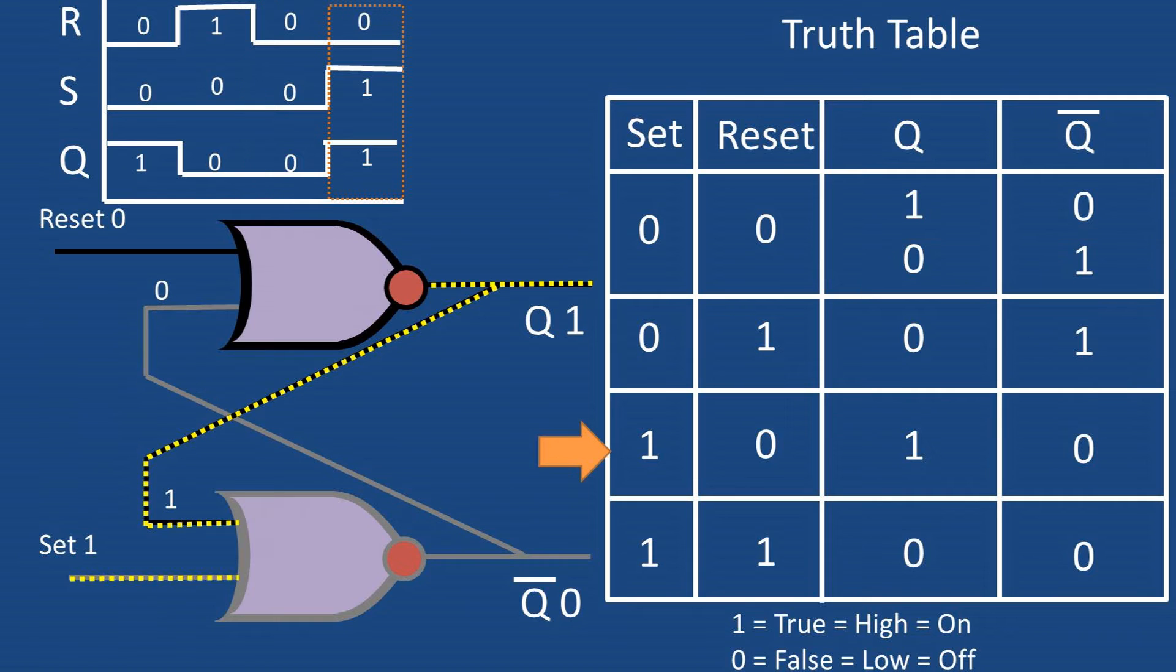Next let's send a set signal of on or one to the set NOR gate. The set NOR reports a logic zero for the NOT Q value. This causes the reset NOR to have two zero inputs which results in a value of Q being one.